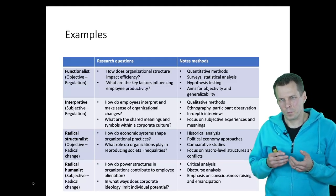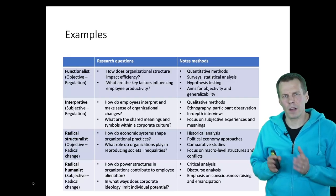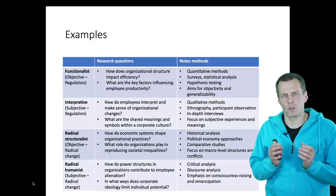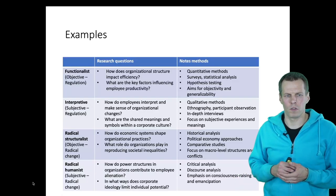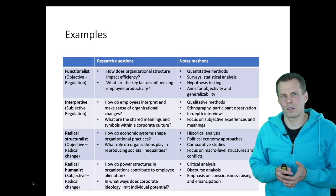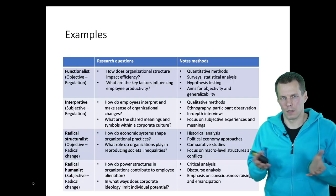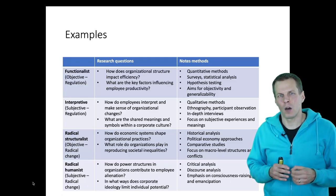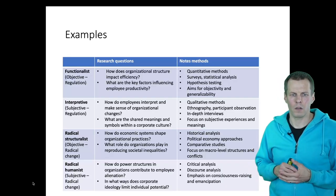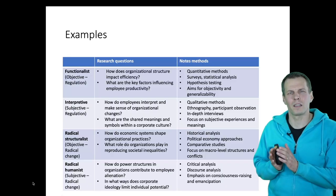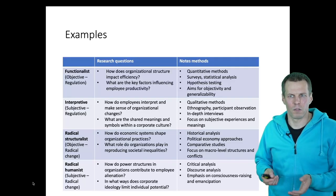The methods in radical structuralism might include historical analysis, economics analysis, or quantitative data. The radical humanist focuses not on structures of the business world but on humans — how does language shape society, how do power structures in organizations contribute to employee alienation? For example, we might study how the use of the term 'foreman' — the older term for supervisor — shapes how women are perceived in organizations. So we might do things like discourse analysis and critical analysis, looking at how current organizational practices affect the well-being of others.